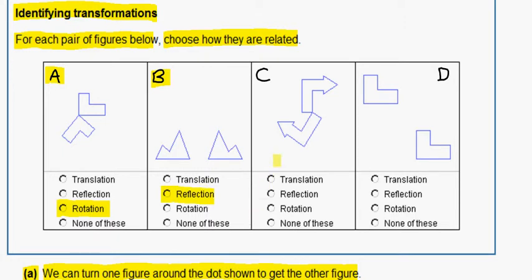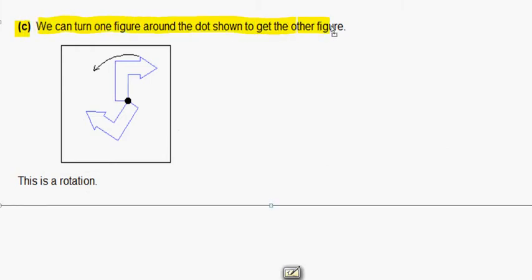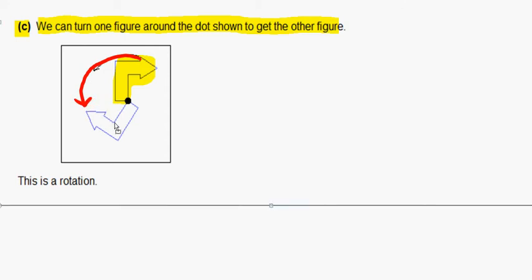Now let's look at C. In figure C, we can turn one figure around the dot shown to get the other figure. We start with this figure here and rotate it around the dot this way to get this figure here.